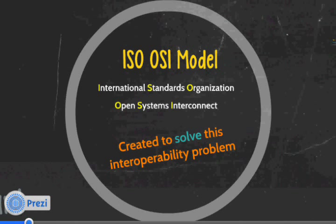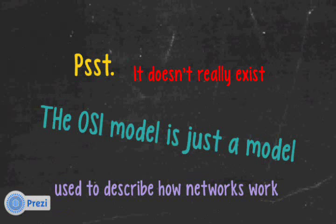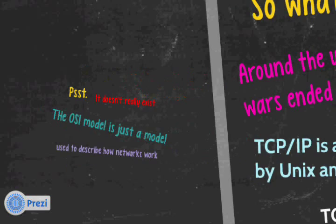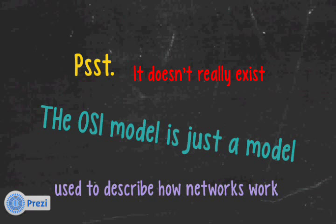The International Standards Organization realized there was a problem and created a template, or guide, or model called Open Systems Interconnect. It was created to solve this interoperability problem. Something important: it doesn't really exist — it's just a model, just a guide. The OSI model is used to describe how networks work.